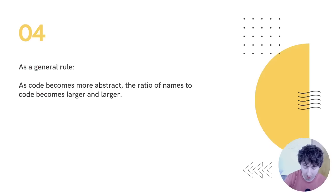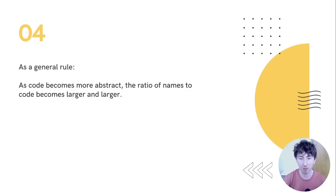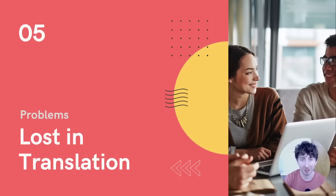As a general rule, as code becomes more abstract — as code bases become larger — the ratio of names to code becomes larger and larger. A larger percentage of a file is occupied by names, and less of it is occupied by actual operative code. This starts to create problems as we end up with more and more names and less and less code.